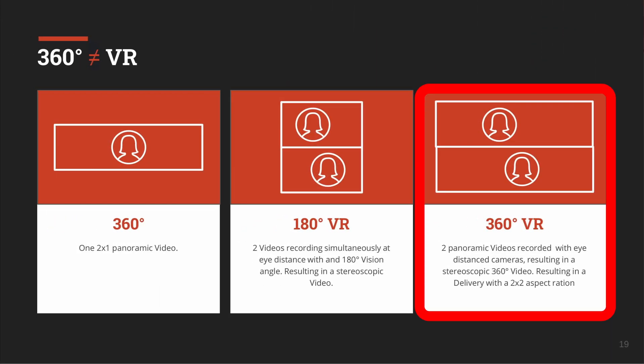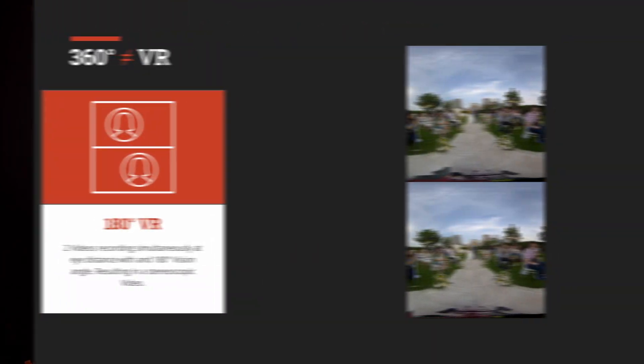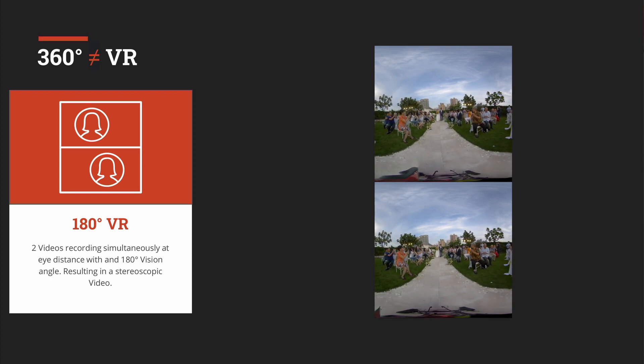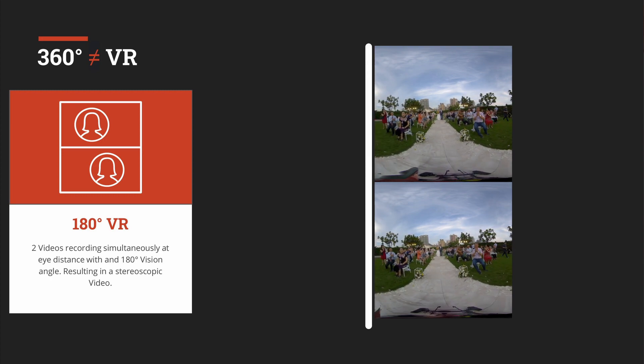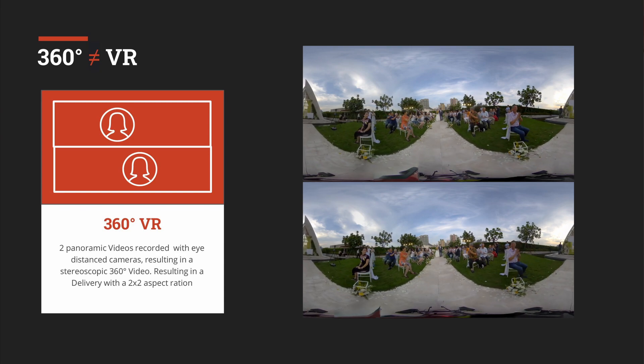For VR videos, you have to distinguish between 360-degree VR and 180-degree VR. For VR 180, you use a 1-to-1 aspect ratio for each camera and stack them on top of each other, giving you a vertical video that is twice the height and once the width. For a full 360-degree VR video, you stack two panoramic videos on top of each other, ending up with a giant 1-to-1 aspect ratio video with a very large resolution.